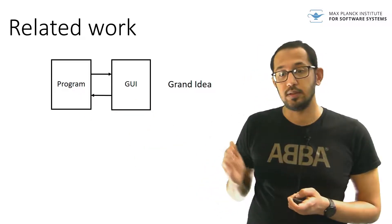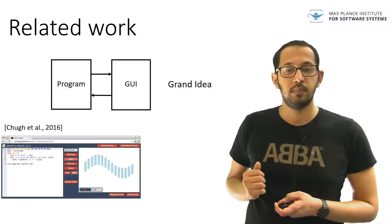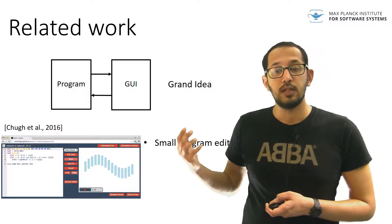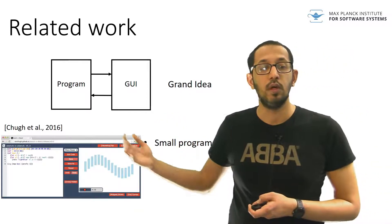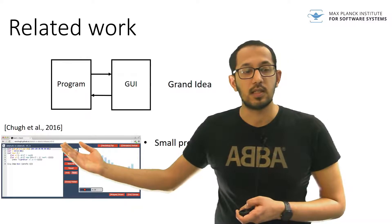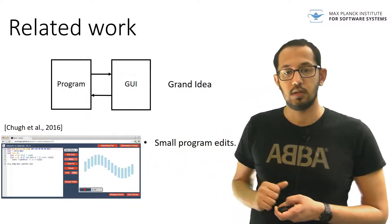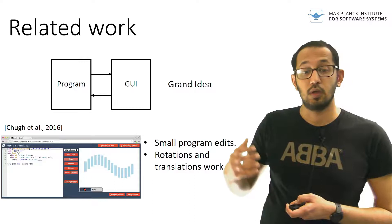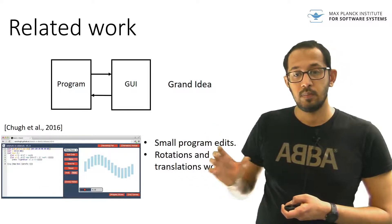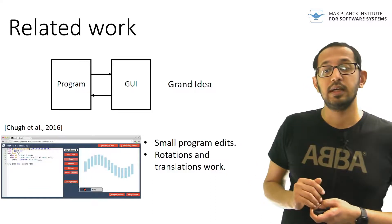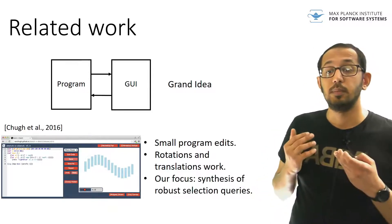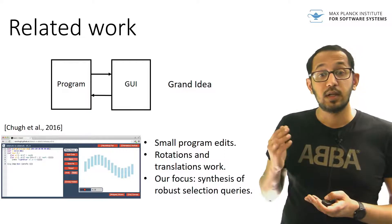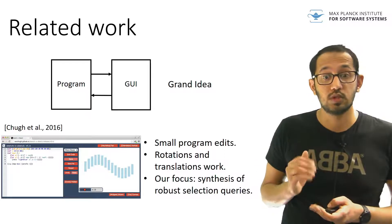Some work already exists on this theme for 2D vector graphics. Ravi Chug and others have used constraint solving along with heuristics to enable small program modifications using the GUI, so changes in the GUI are reflected back in code. Concepts from this prior work can be applied to CAD in the context of rotations and translations. The focus of our work is on the synthesis of robust selection queries from GUI-based selections and operations — the parts that are difficult to come up with in programming and are the source of brittleness in GUI.